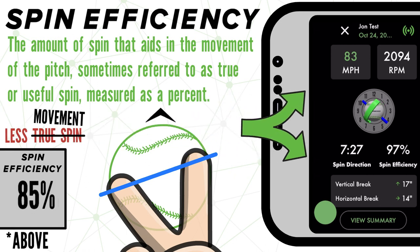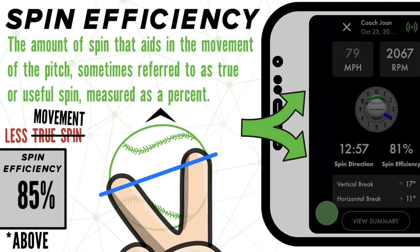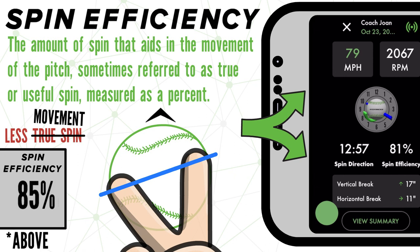If you look at this fastball, its spin efficiency is pretty good, sitting near that 100% mark. You can tell this because the blue line looks to be in line with our point of view here. However, if a pitch has a lower spin efficiency, you will be able to see the difference by looking at that blue line — if one side appears much closer than the other, then you can expect that pitch to have a lower spin efficiency.